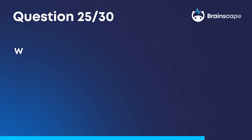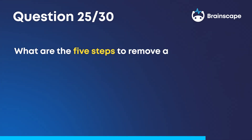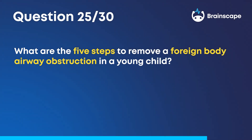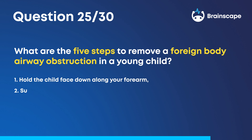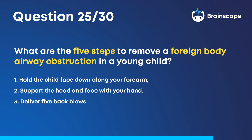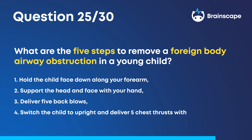Question 25. What are the five steps to remove a foreign body airway obstruction in a young child? One, hold the child face down along your forearm. Two, support the head and face with your hand. Three, deliver five back blows. Four, switch the child to upright and deliver five chest thrusts with two fingers. And five, check the airway.